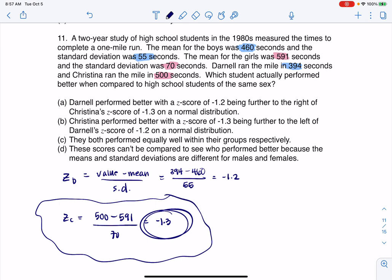So let's see, Darnell performed better with the z-score? No, he did not. Christina performed better with the z-score of negative 1.3, being further to the left of z-score. Yeah, so if we take a look at what's being written in B.